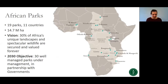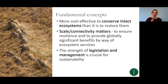Our vision is part of the world's broader conservation vision: that 30% of Africa's unique landscapes are secure. African Parks' objective for 2030 is to manage 30 protected areas in Africa. In deciding which areas to protect, some fundamental concepts must be considered: it is more cost-effective to conserve intact ecosystems than to restore degraded ones, and scale and connectivity matter to ensure resilience and provide globally significant ecosystem services benefits.